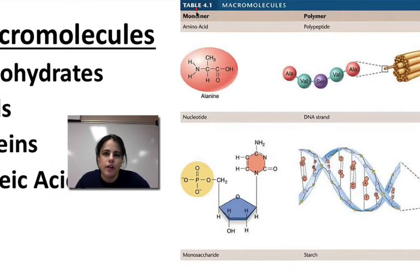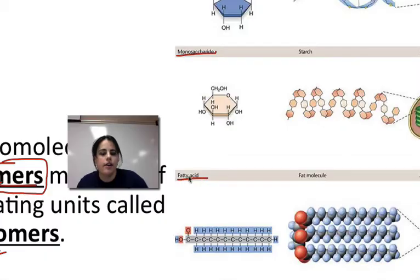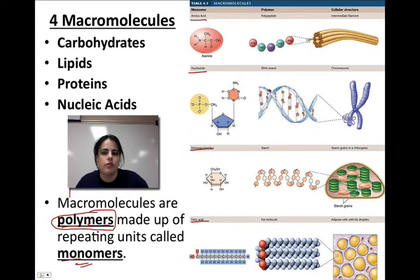If you look at this chart, amino acids are the monomer of proteins. Nucleotides are the monomers of nucleic acids. Monosaccharides are the monomers of carbs. And fatty acids are the monomer-like part of lipids. And then we can look at the polymers as well before they make up larger structures.